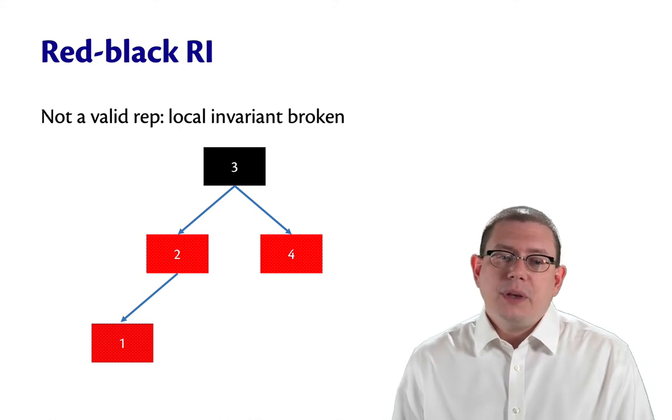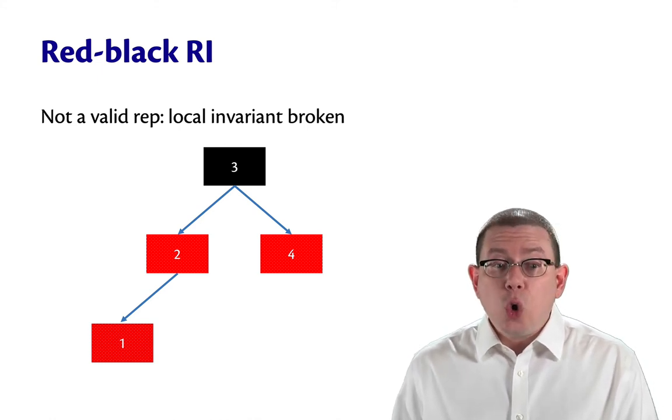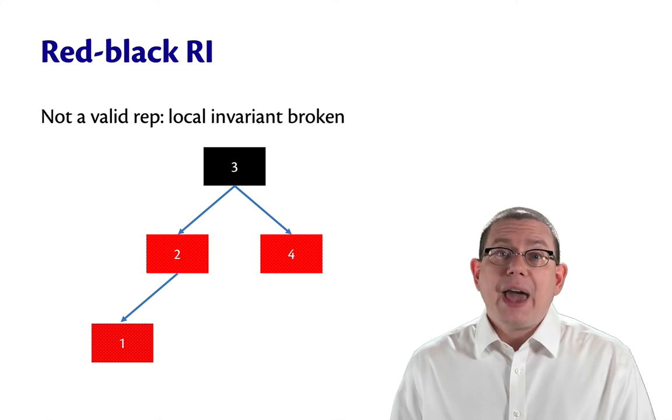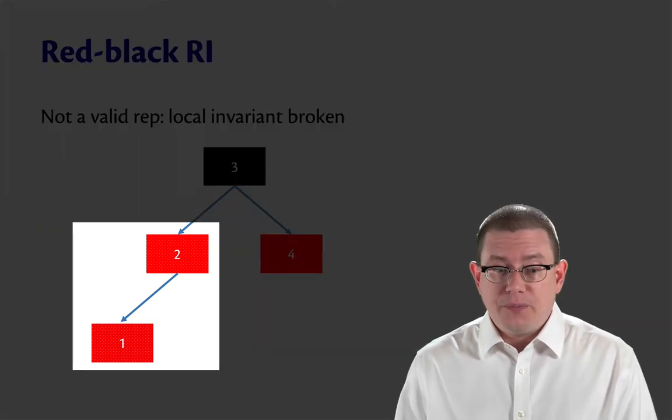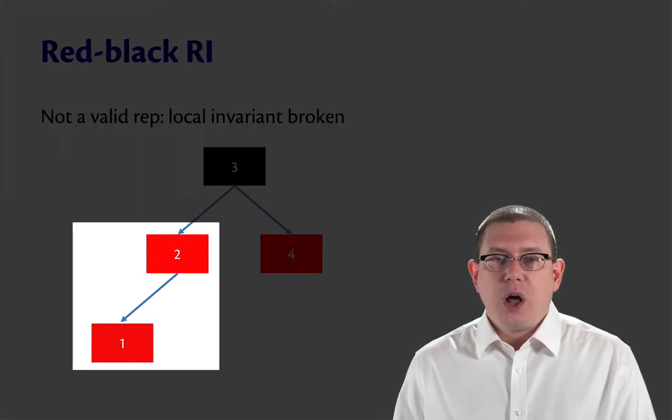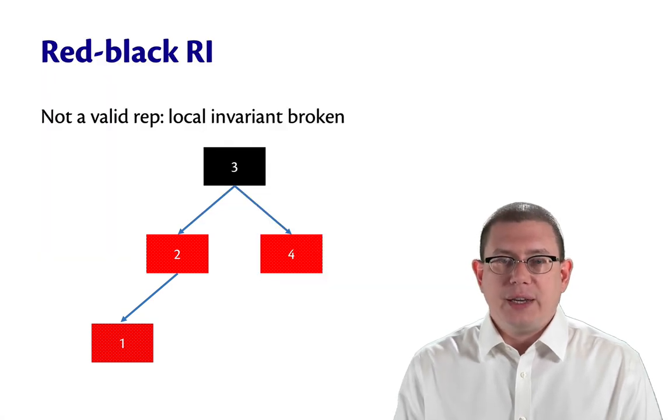Here's another tree. This one violates the local invariant, because this tree has two red nodes in a row. Two and one are both colored red. You're not allowed to do that in a red-black tree.